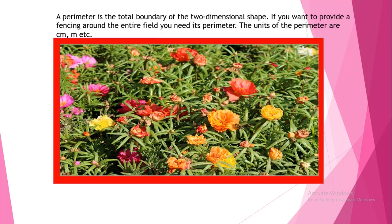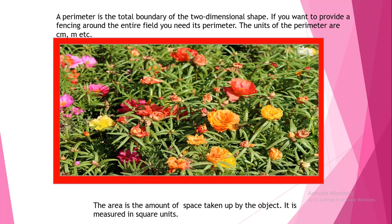So perimeter is the total boundary of a two-dimensional shape. If you want to provide fencing around the entire field, you need its perimeter. The units of perimeter are centimeter, meter, etc. And area is the amount of space taken up by the object. It is measured in square units.